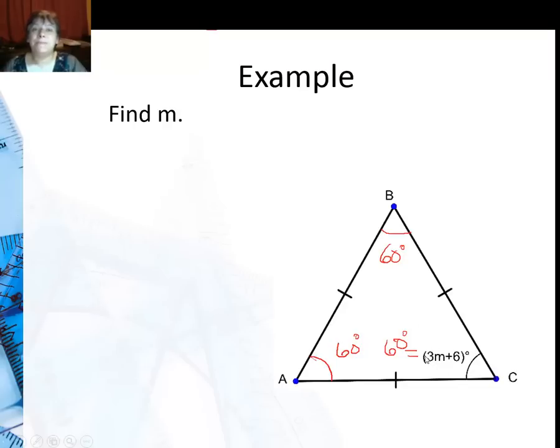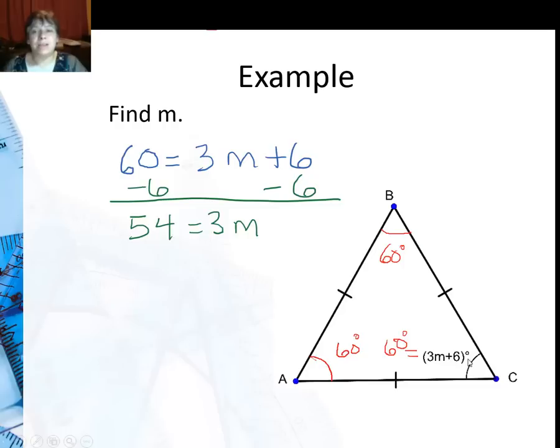So I have to set this value here equal to 60. Then I can do some algebra, subtracting 6 from both sides. I get 54 is 3M, or M is 18.